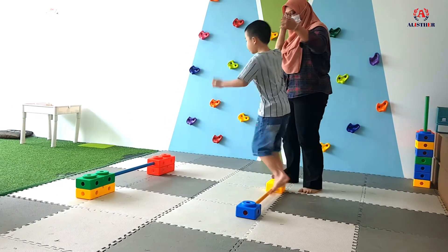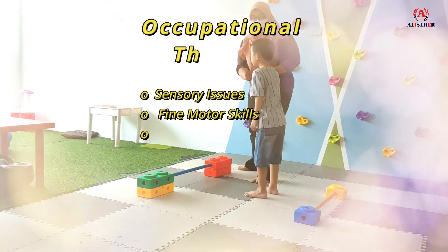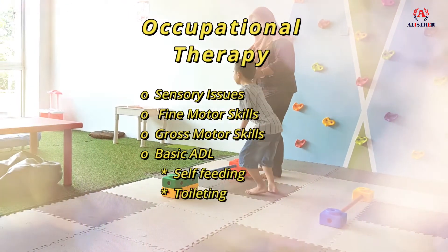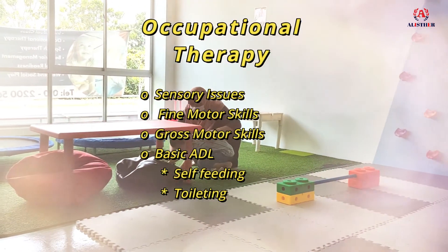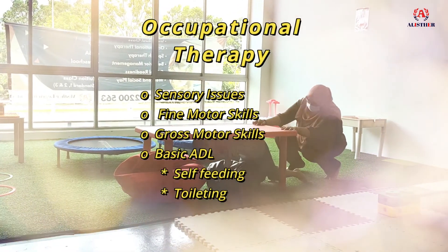In this situation, we will suggest parents to attend occupational therapy. Occupational therapy is a therapy that works on sensory-related issues, fine motor, gross motor, and the basic ADL — for example, self-feeding, toileting, and dressing. By attending occupational therapy, it will help reduce sensory-related behaviour. This will prepare the child for school readiness and be able to cope with functional daily activities as independently as possible.